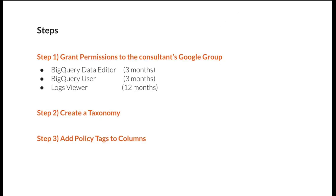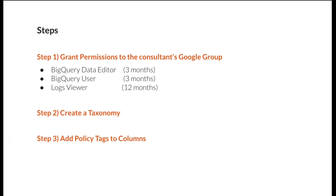We're going to walk through this in three steps. The first step is to grant permissions to the consultants at the project level, exactly as reviewed in the first video of this series. Once that's complete, we'll create a taxonomy which organizes your policy tags, then add those policy tags to the columns we want to hide, and run a test to make sure everything is working properly.